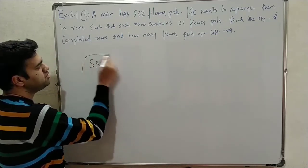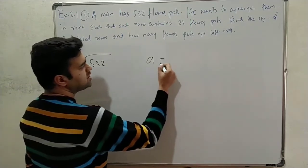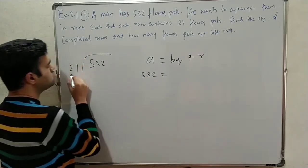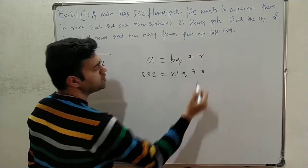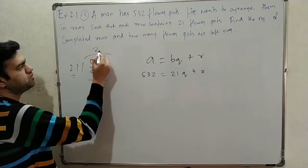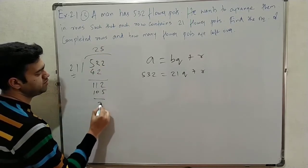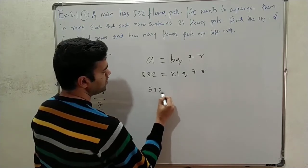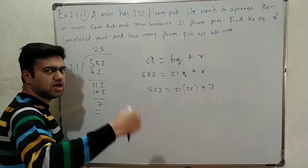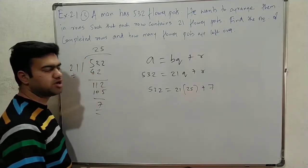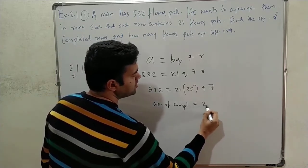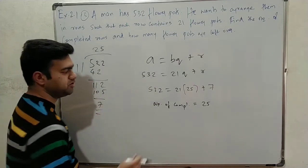So we divide 532 by 21 in the Euclid's division format. 21 × 2 = 42, remainder 11; 21 × 5 = 105, remainder 7. Substituting: 532 = 21 × 25 + R. So 21 × 25 = 525, remainder 7. Number of completed rows is 25, and the remainder is 7.